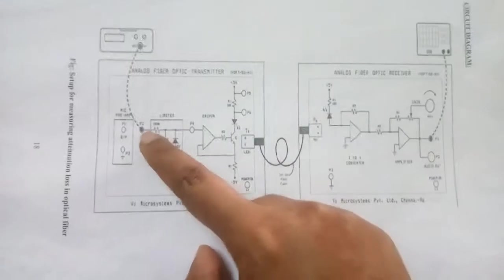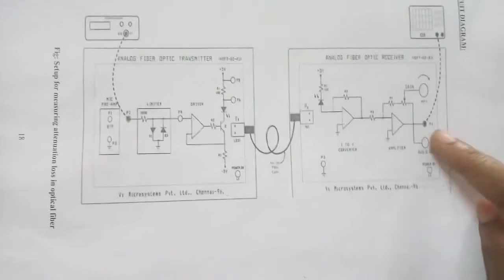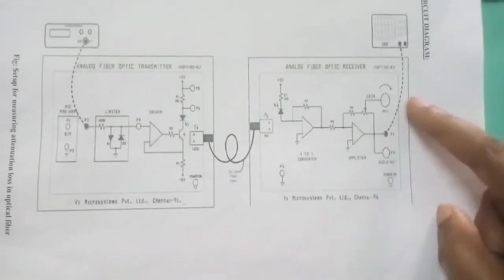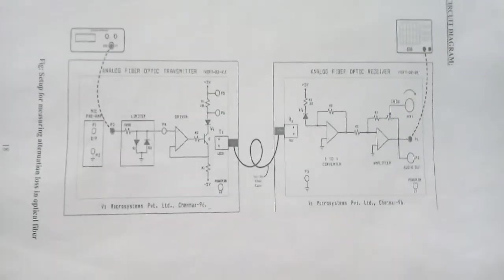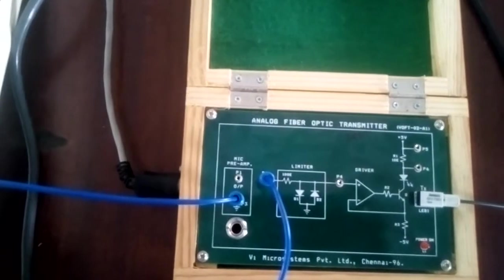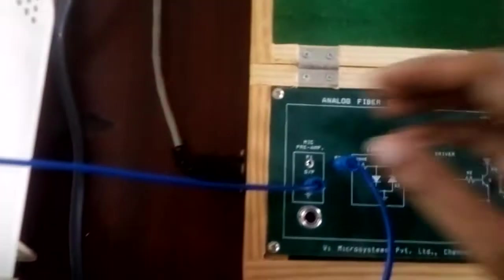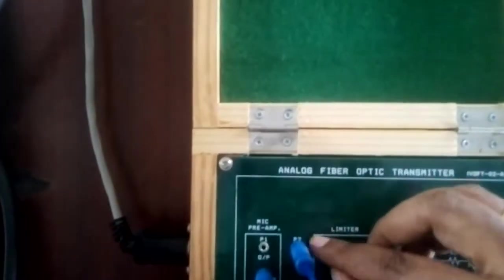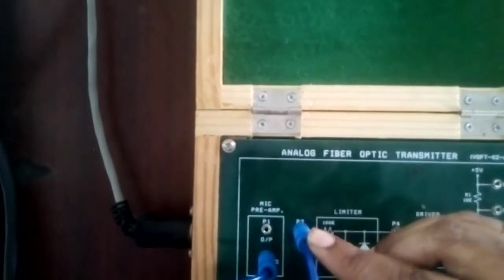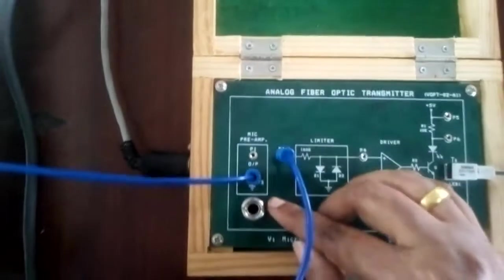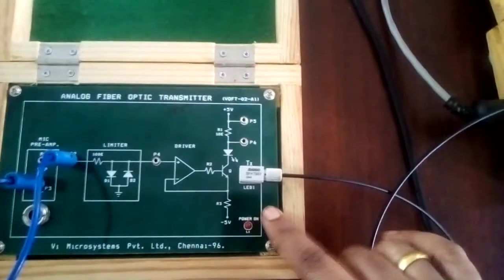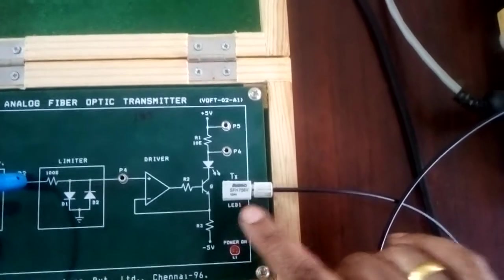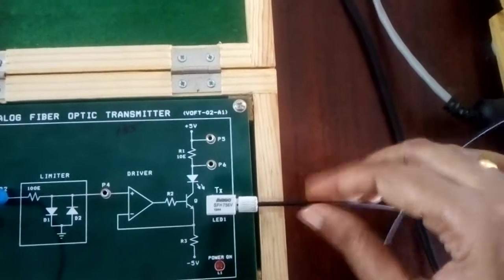FG is connected to P2 as input. CRO is at P1 as output. Now looking at the diagram: connect the probe to P2, which is the input point. The probe is the input and P3 is the ground. This is the LED — LED will generate the light source. The fiber carries the signal.